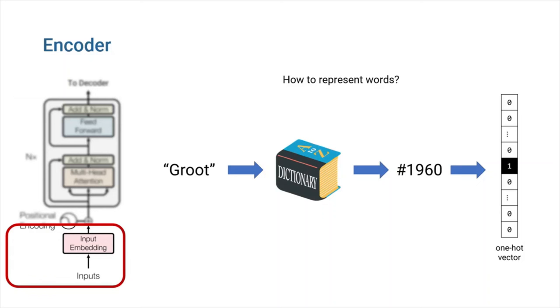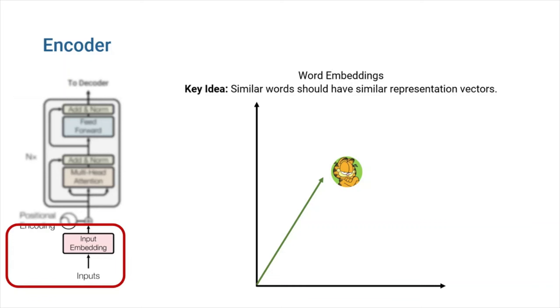We could simply give the computer a dictionary and represent each word by its number in the dictionary, or by converting that number into a one-hot vector. But this is actually silly. We need another, more clever way for representing the words. This clever way is called word embeddings. Word embeddings are a method of representing words with vectors in such a way that similar words have similar vectors. For example, we want the word cats to have a similar vector with the word dog.